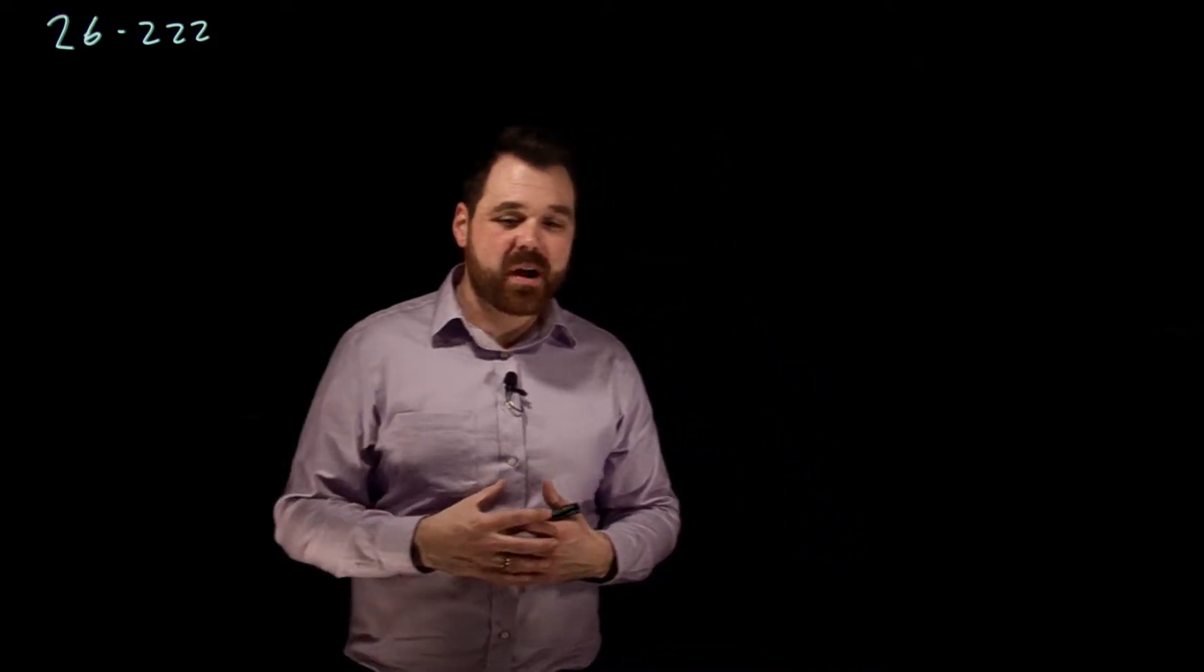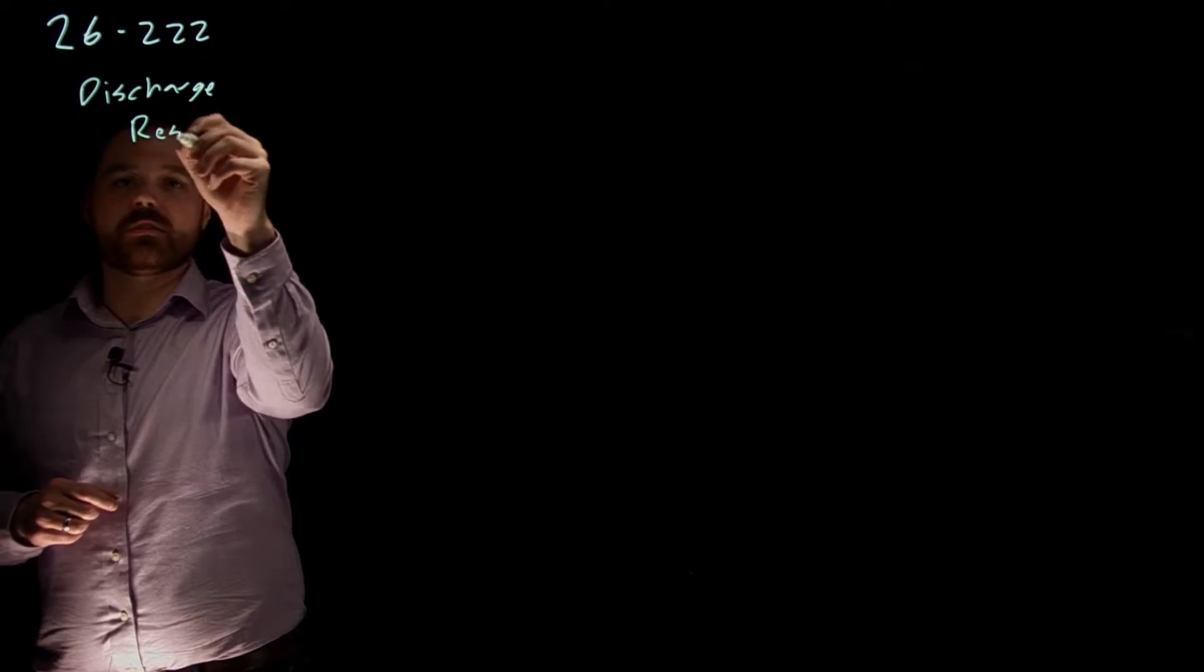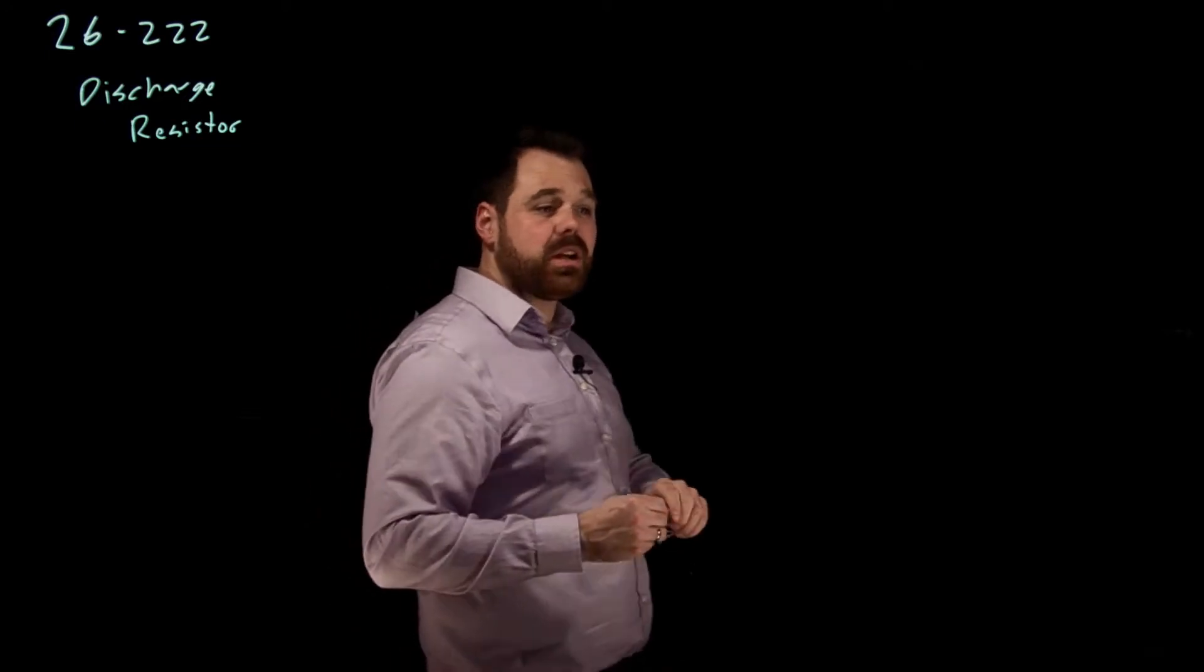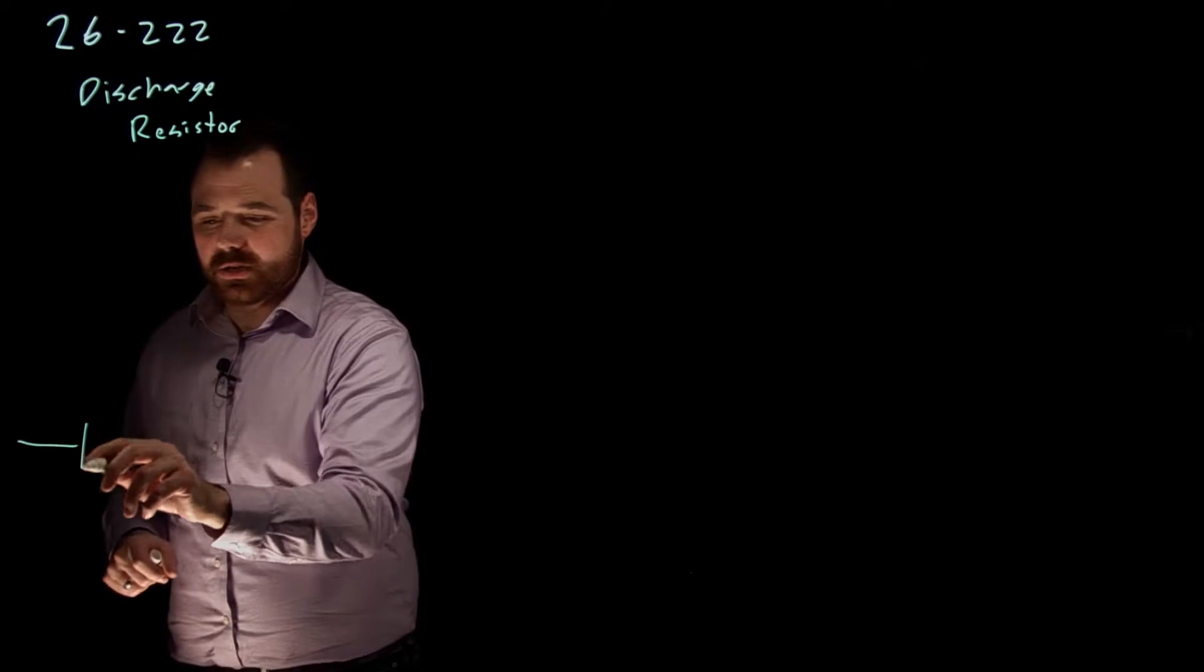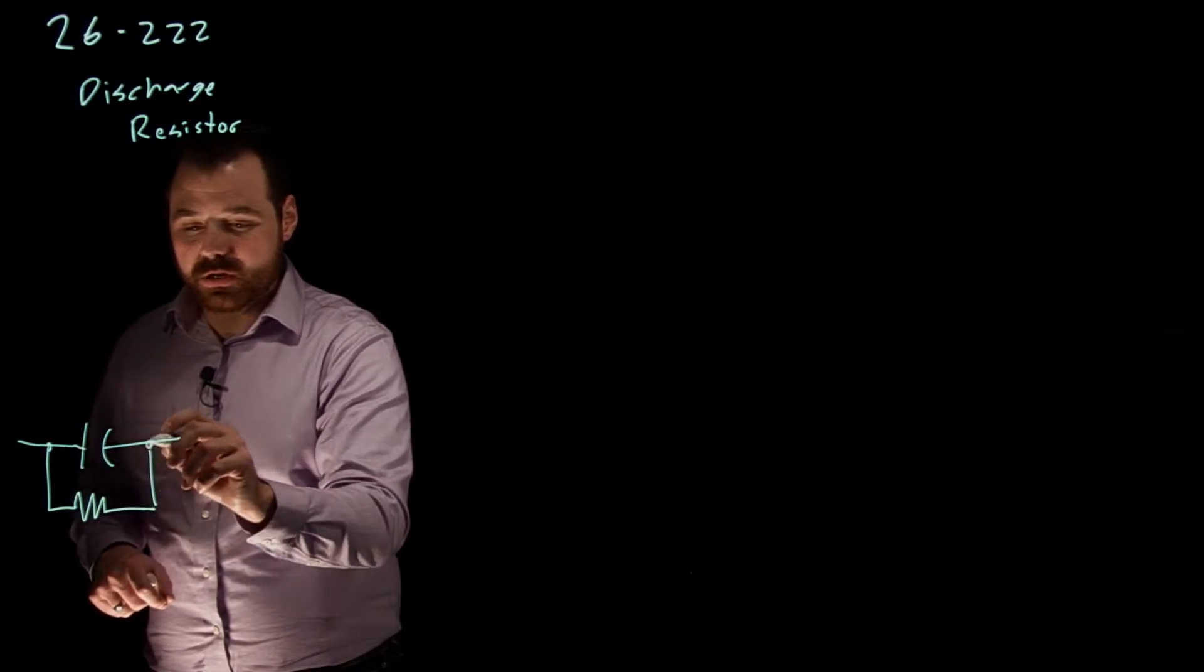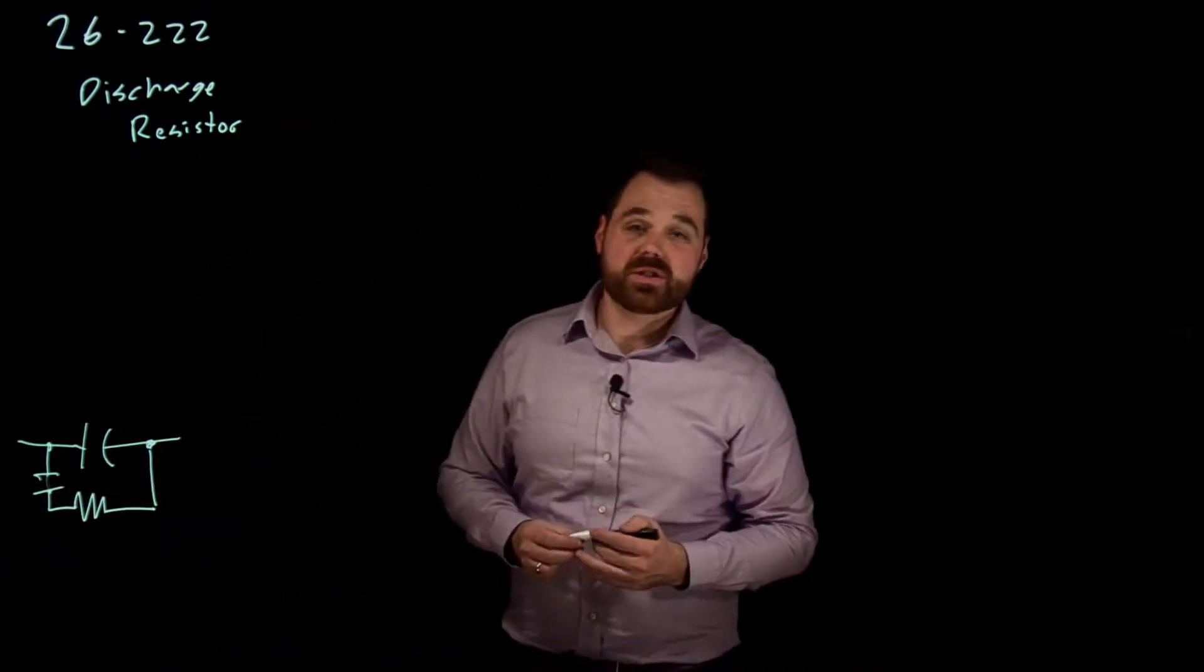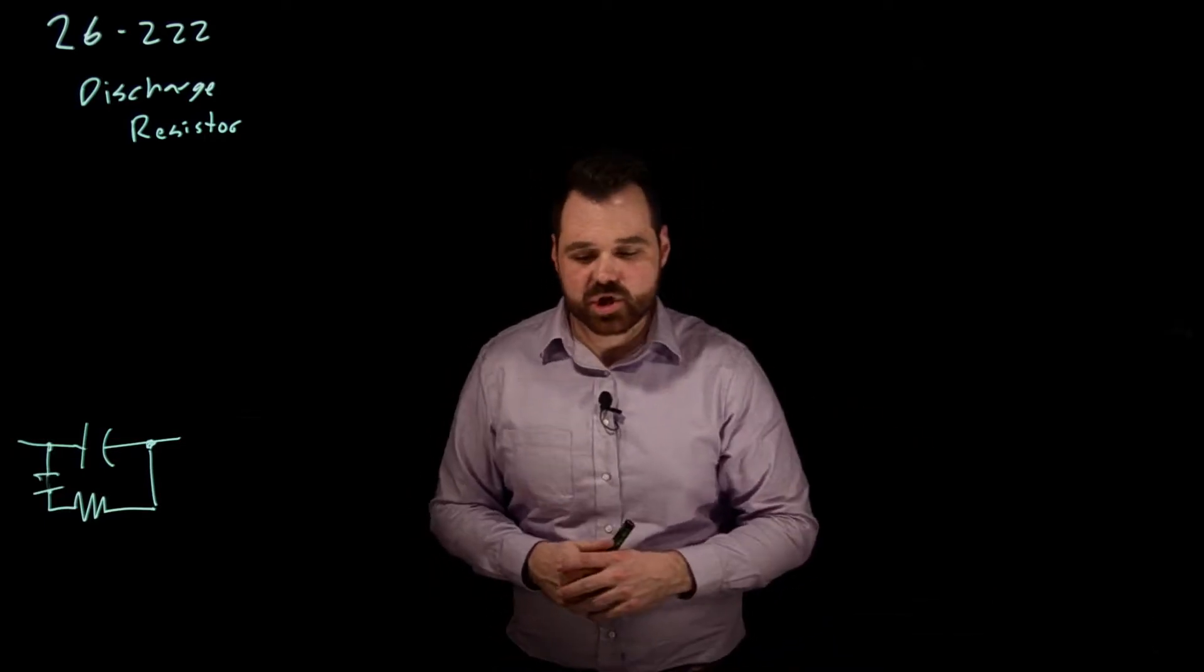What I want to spend a little bit of time on right now is actually sizing what we would call a discharge resistor. So sizing this discharge resistor - this is our capacitor. We would put it in parallel with the cap. And we might have it switched or something by putting in a set of contacts or something like that, some way to put that discharge resistor into the circuit so the capacitor can discharge.